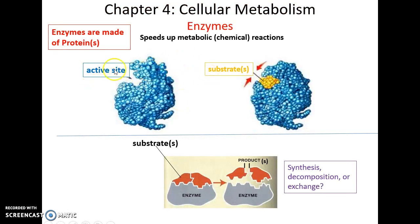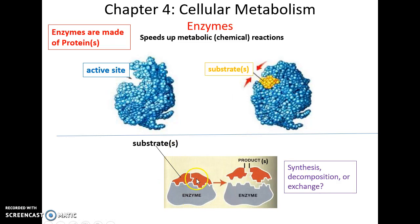Often, enzymes act as catalysts. Enzymes are proteins with an active site that will bind to a specific substrate to do something, and that something will happen much faster than if the enzyme were not present. Here's an example: an enzyme has one big substrate, does its reaction, and the substrate becomes two little products — this would be an example of decomposition.